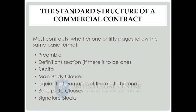I want to spend a bit of time on the recital today. The recital is that section starting 'whereas' - most lawyers don't know how to use it. You should use it to explain the background to the situation and show why the parties are making a deal and what they're trying to achieve. If there are important third parties not parties to the contract - for example, the railway company that will transport the goods - this is where you should mention them. And then we come to the main body clauses, which contain the reasons why you entered into the contract: the money, the goods, the quantity, quality, dates of delivery, payment terms, currency.